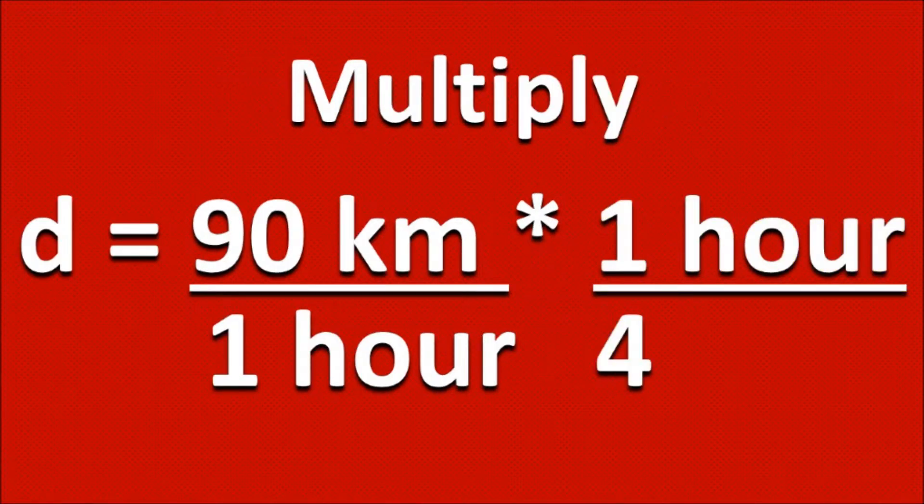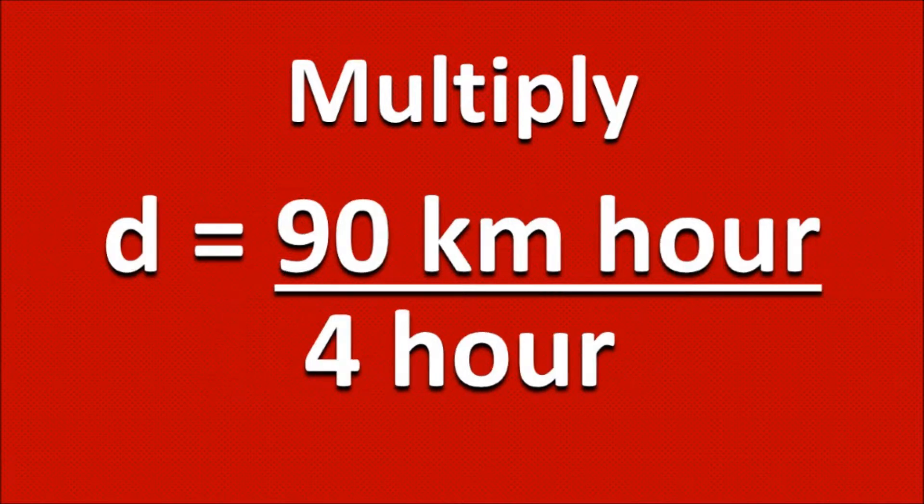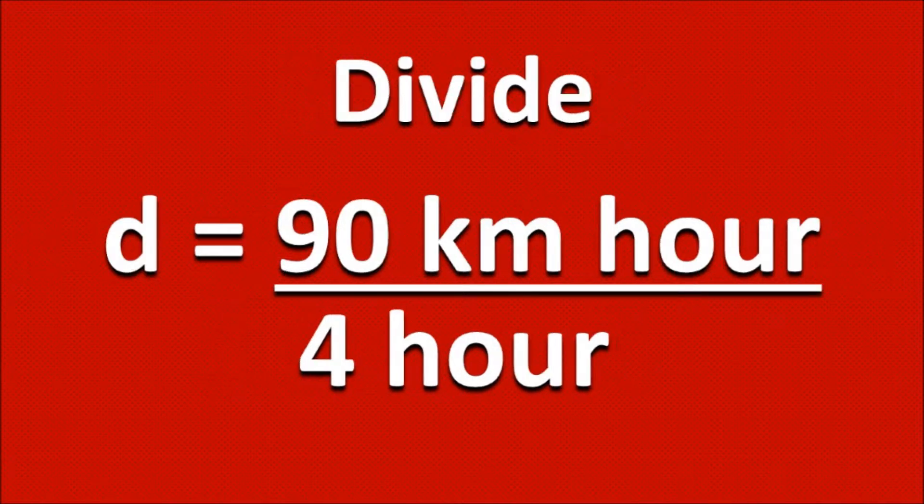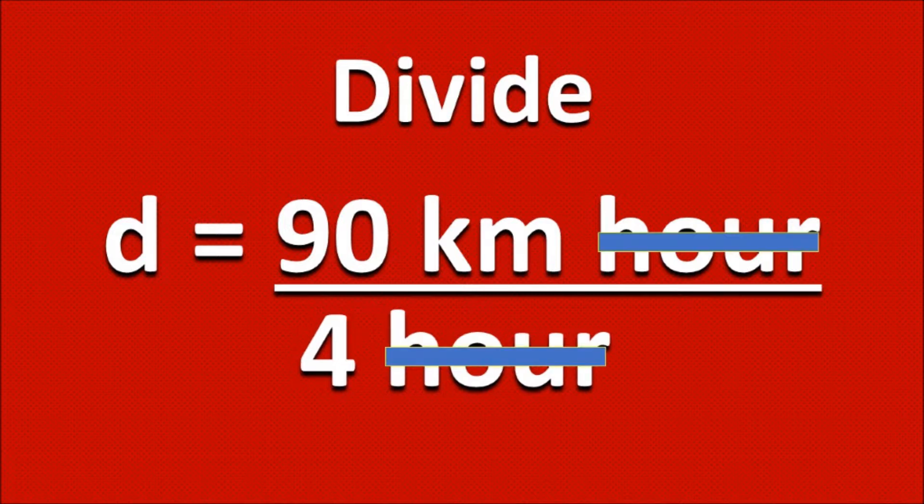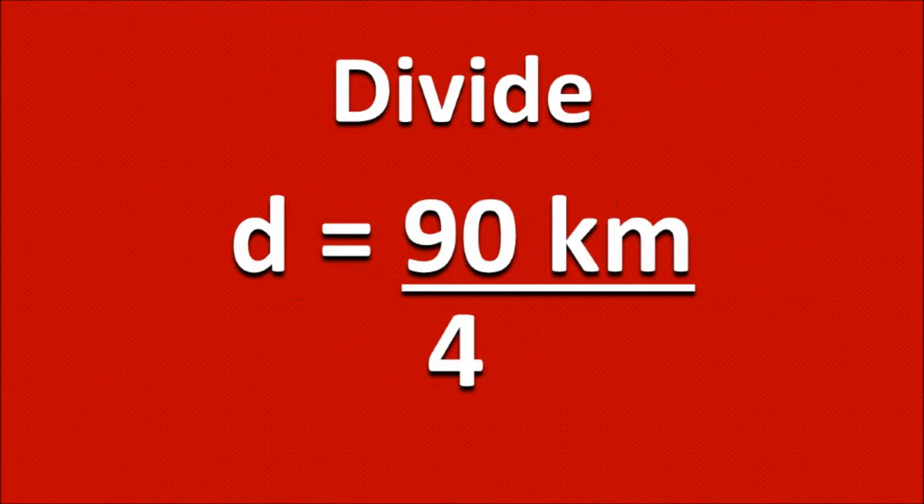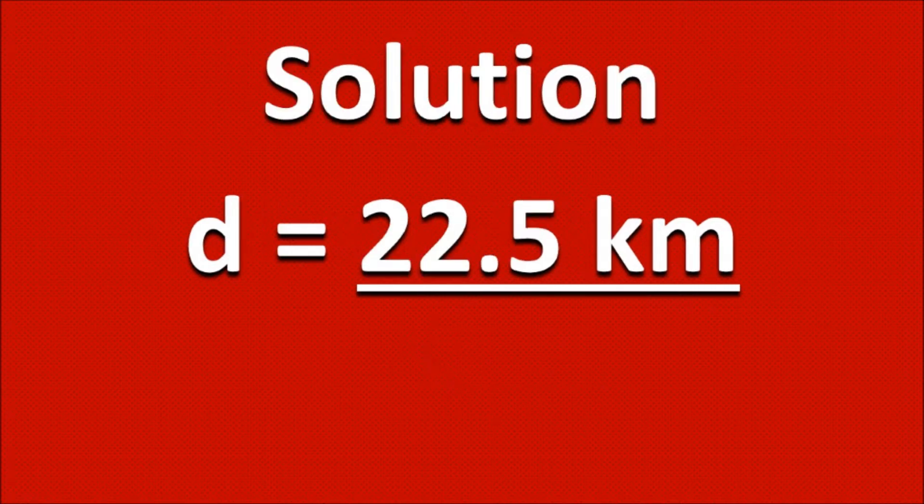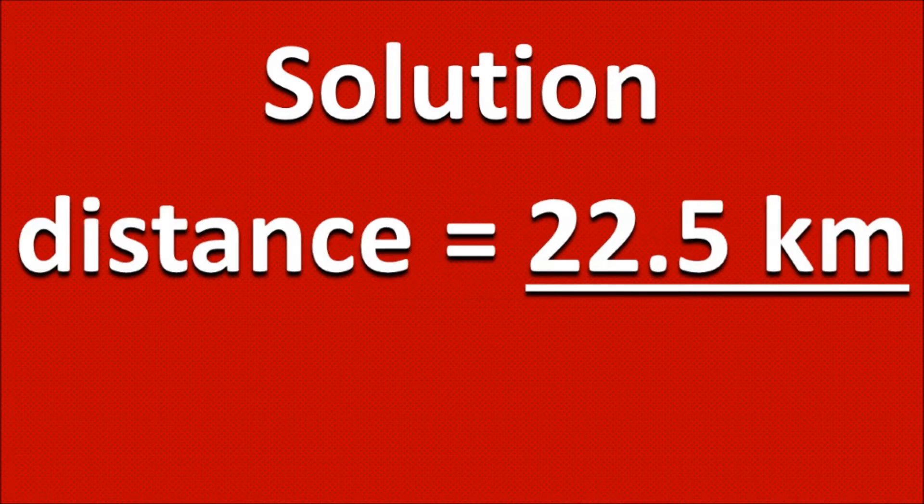Let's multiply this across. Okay, let's divide and cancel the hours out. So now we have 90 kilometers divided by four, which equals 22.5 kilometers, which is our distance.